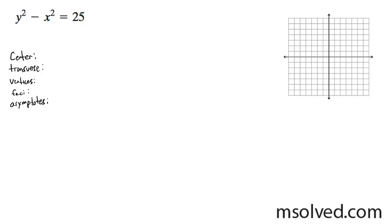We want to find the following for the hyperbola. First thing we've got to do is divide by 25. We end up with y squared over 25, x squared over 25 is equal to 1.